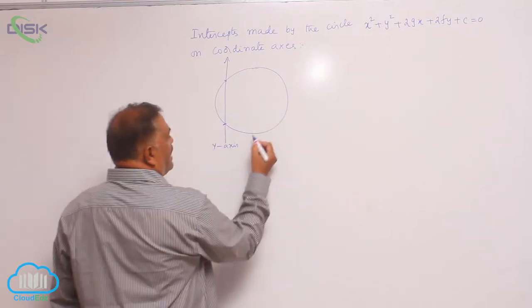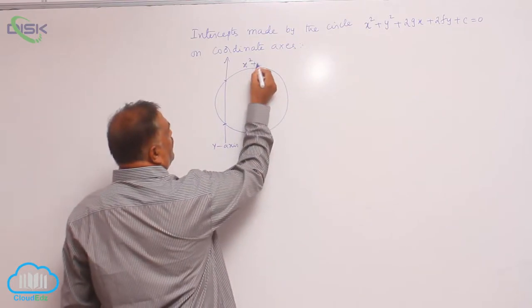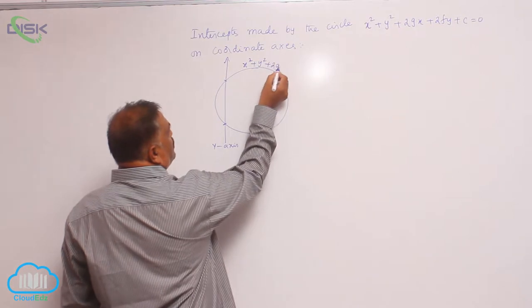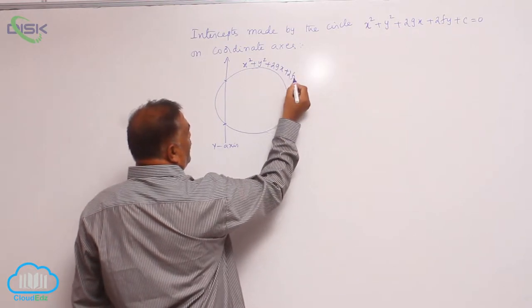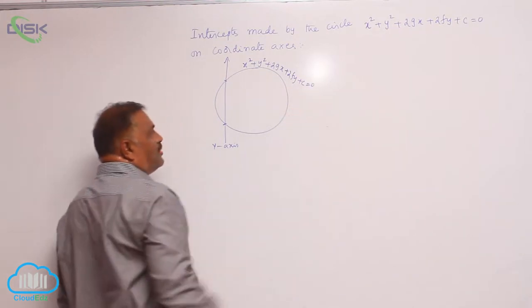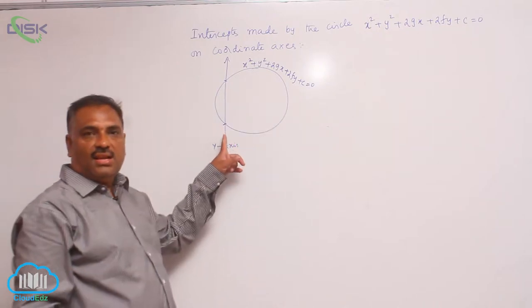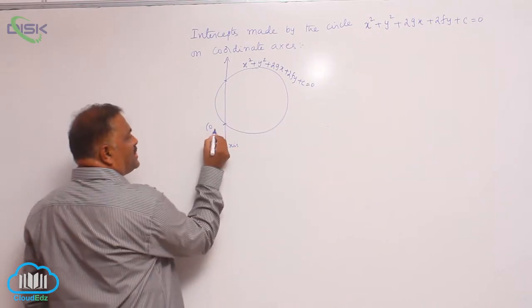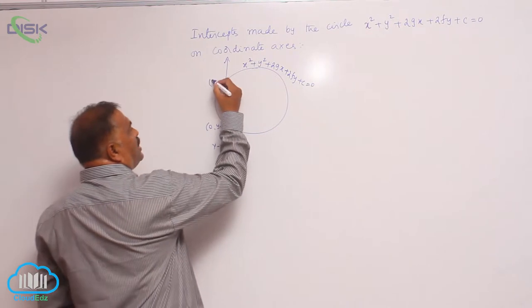We will find out the same circle equation x square plus y square plus 2gx plus 2fy plus c is equal to 0. The y-axis cuts the circle equation in two points: 0 comma y₁ and 0 comma y₂.